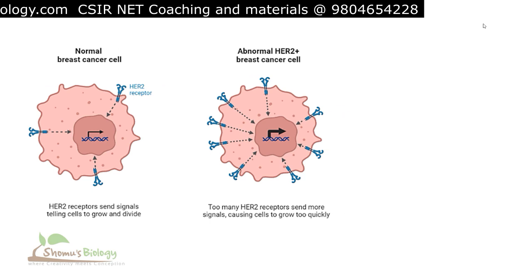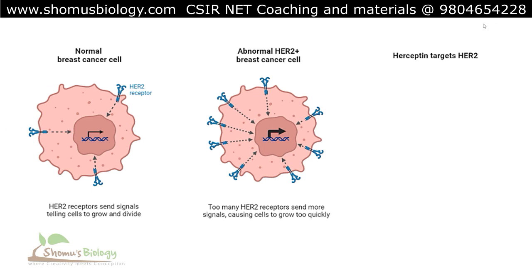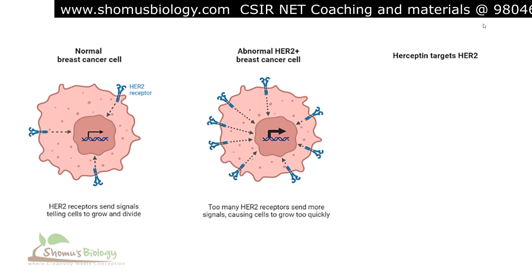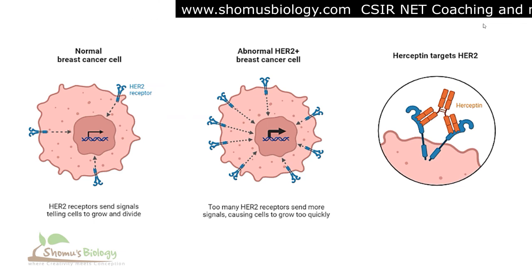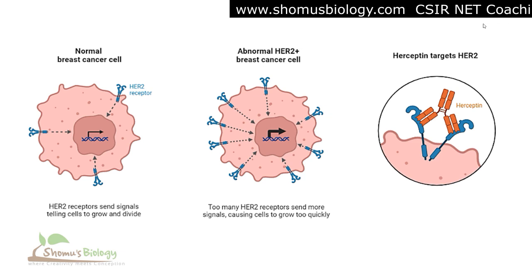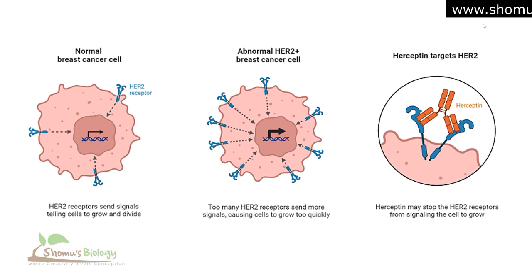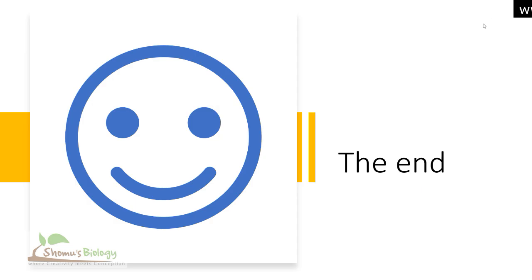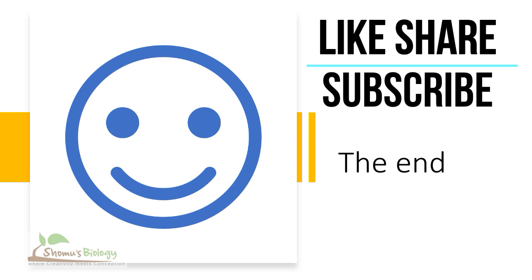Herceptin, a monoclonal antibody drug, targets HER2 receptors by preventing their dimerization. It prevents HER2 from forming dimers with HER2, HER3, HER4, or other partners. This blocks cytosolic site phosphorylation and sustains the cell from further abnormal growth. That is how herceptin-mediated inhibition of HER receptor signaling works. If this video was clear, please hit the like button, share it with your friends, and subscribe to the channel for more videos.